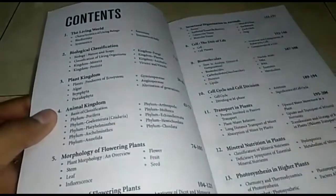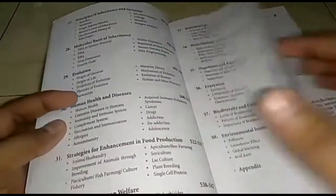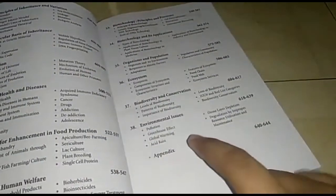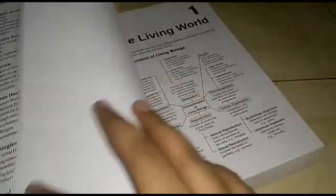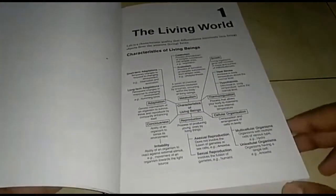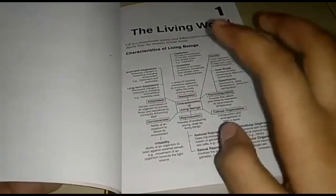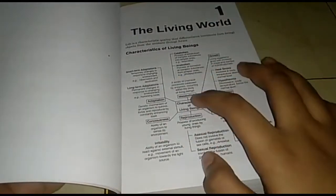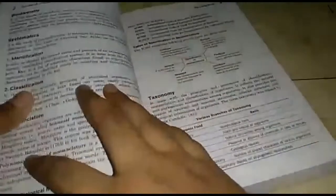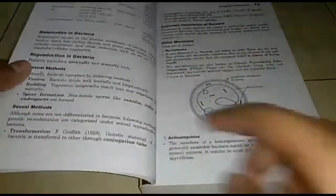At last it also has an appendix, which is very useful — I will mention it at the end of the video. When we turn the page, we have some flow charts for the first lesson. So for every lesson there is a flow chart, which is very useful. Next we have some biological terms, definitions, and also a flow chart — there are many flow charts.